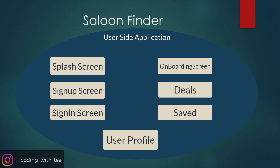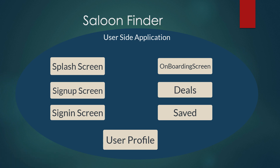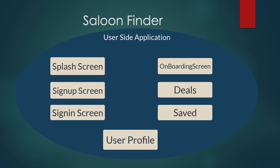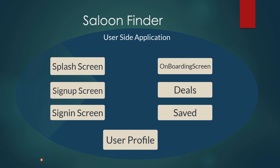In our home screen there will be a grid view for salons that are nearby our location. We can press on any salon to see its details by clicking items in the list. In the deals screen we have all the deals provided by the salons, in the saved screen there will be saved salons from the home screen, and in the user profile screen our profile will be shown.